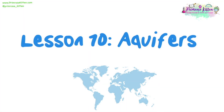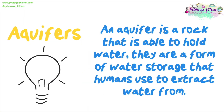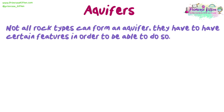Lesson 10: Aquifers. An aquifer is a rock that is able to hold water. They are a form of water storage that humans use to extract water from. Not all rock types can form an aquifer — they have to have certain features in order to be able to do so.